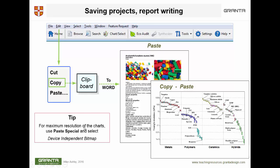One tip about copy-pasting: the best way to paste into Word when dealing with these records and charts is to use Paste Special and select Device Independent Bitmap. If you simply say Paste, it pastes the information as a picture file. The resolution is better and there's more flexibility if you store it as a Device Independent Bitmap.